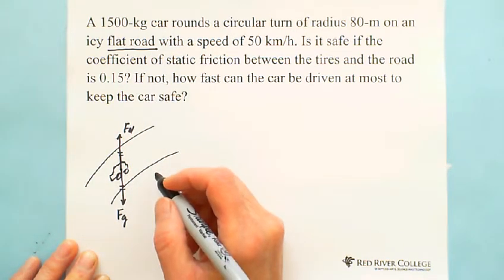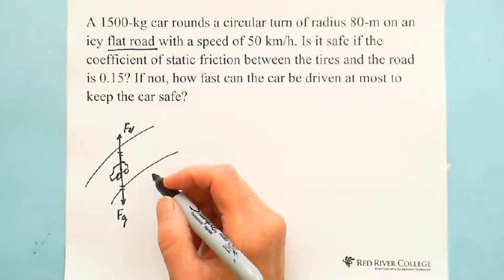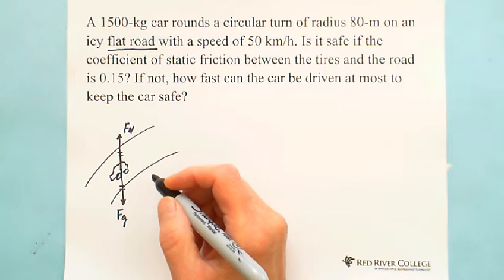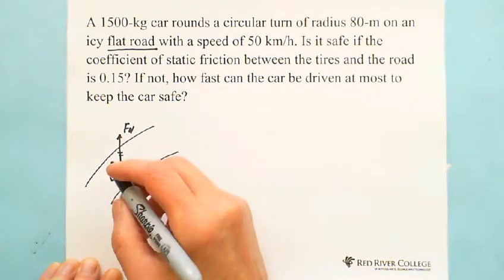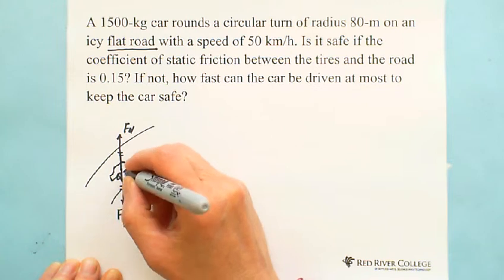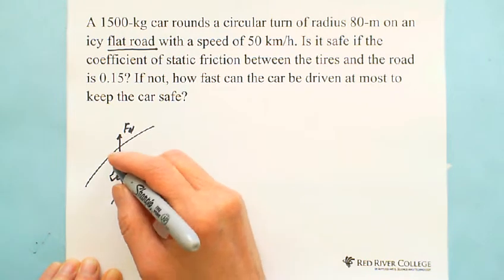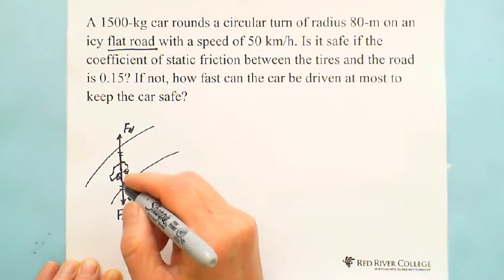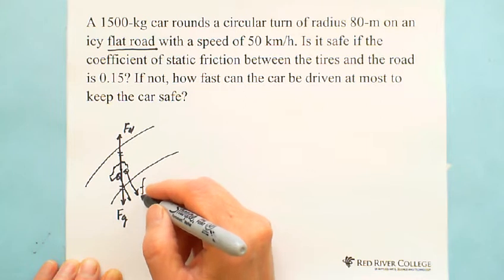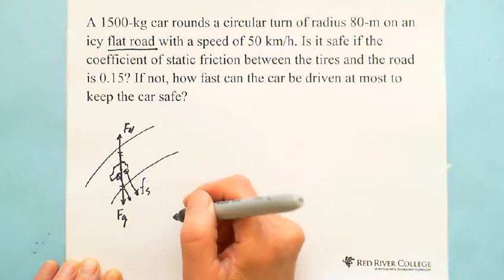And the car is doing circular motion. So as we know, static friction is very useful. Static friction keeps people walking forward and also keeps the car turning around. So the static friction is pointing to the center of the circle. We're going this way, the center of the circle over here. So in this situation, the centripetal force comes from static friction.